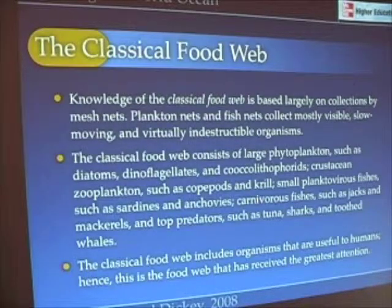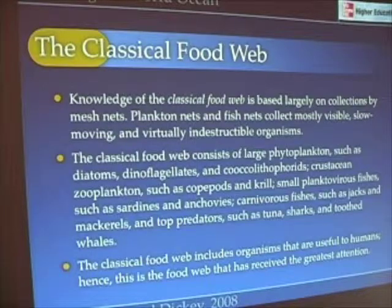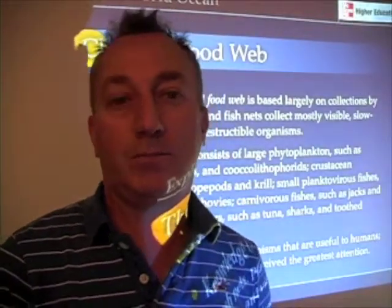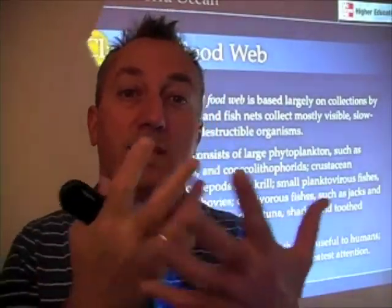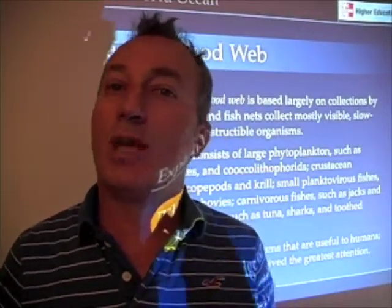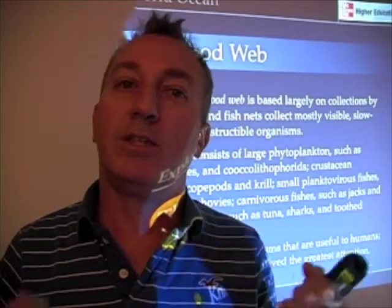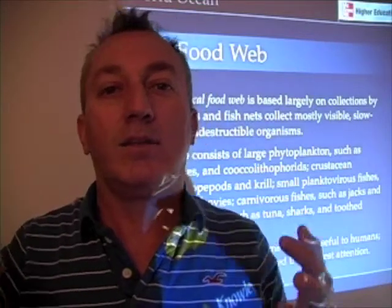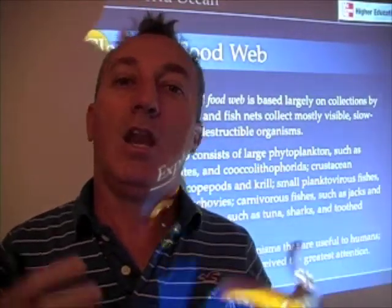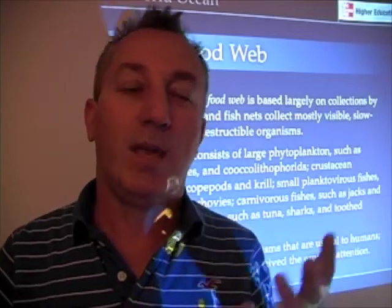Let's talk a little bit more about the classical food web and look at it in more detail. It's really based on collections of organisms that we can collect with nets. The classical food web is really the net food web, whether it's a plankton net with a mesh around the size of stockings, or a fish net catching larger organisms. As humans dragged nets through the ocean, they collected organisms that could be studied, counted, weighed, and looked at, and in that, our understanding of the classical food web came about.